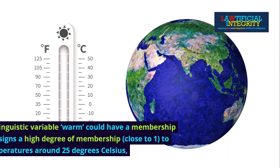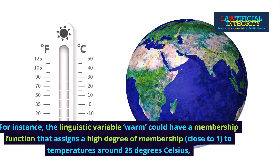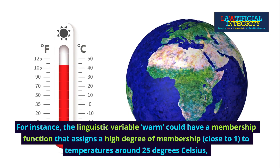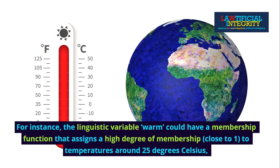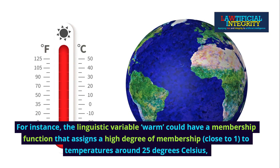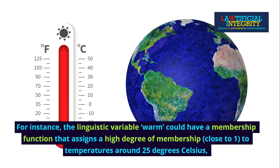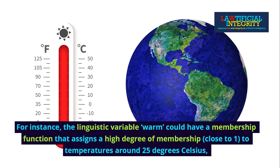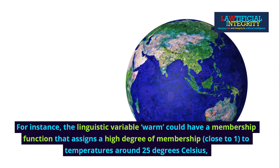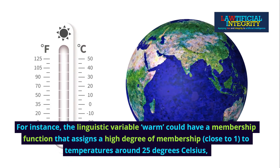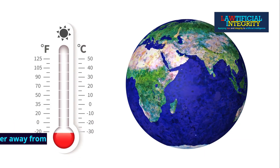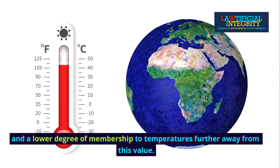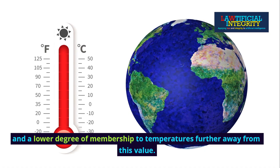For instance, the linguistic variable 'warm' could have a membership function that assigns a high degree of membership, close to 1, to temperatures around 25 degrees Celsius, and a lower degree of membership to temperatures further away from this value.